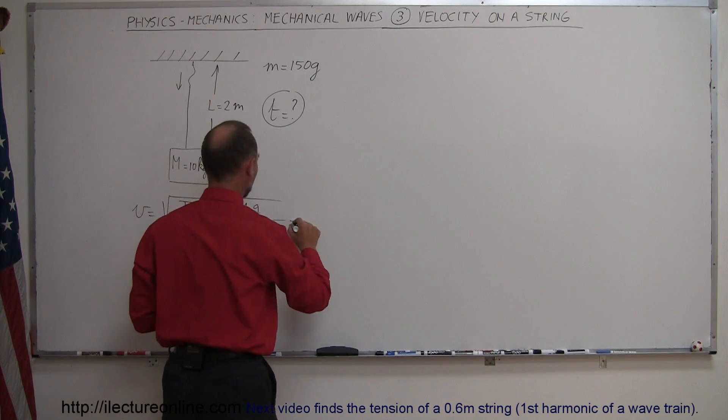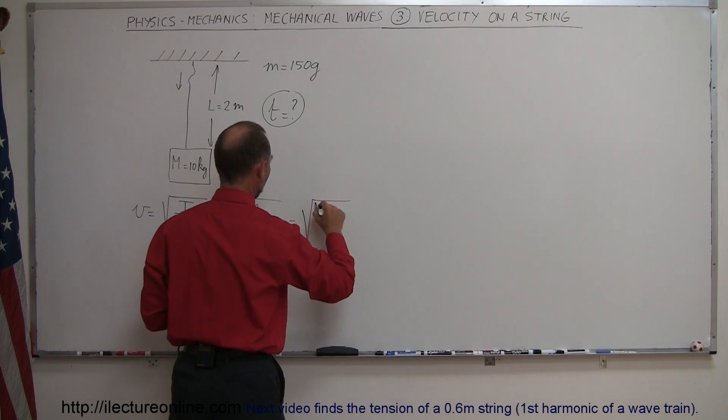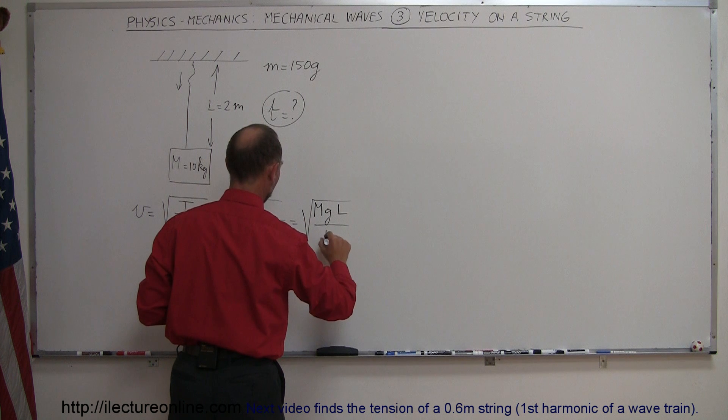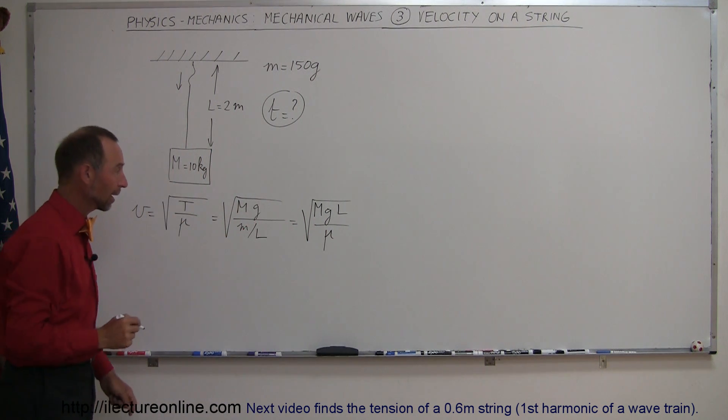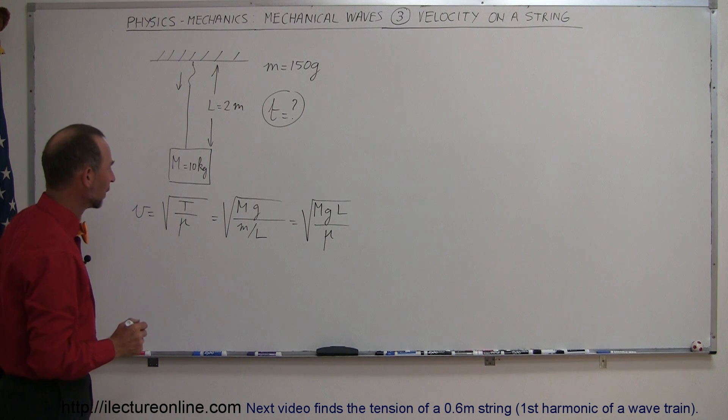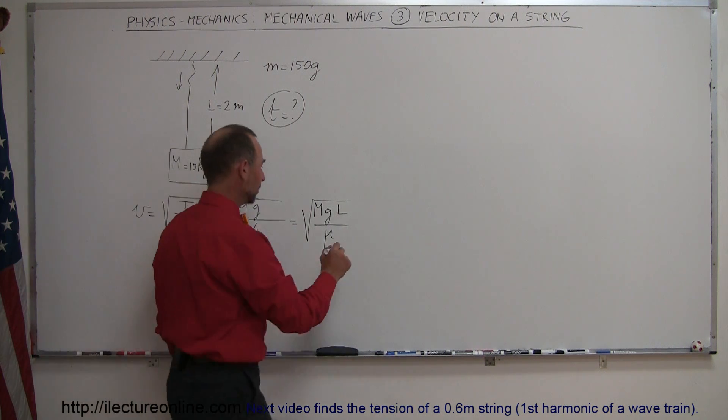Alright, so simplifying this a little bit more, this is equal to the square root of the mass of the object times g times the length divided by m, because when divided by the length in the denominator, that's the same as multiplying times the length in the numerator. Okay, now we can go ahead and plug in the numbers and see what we get.